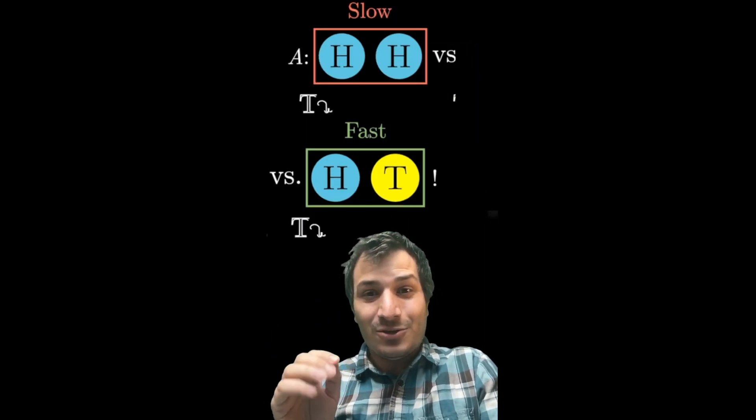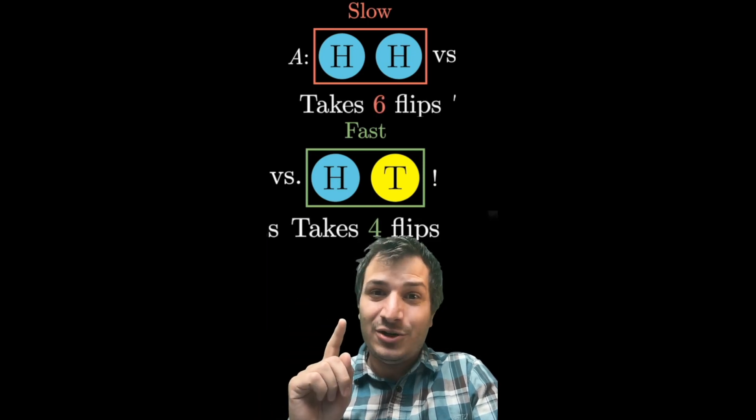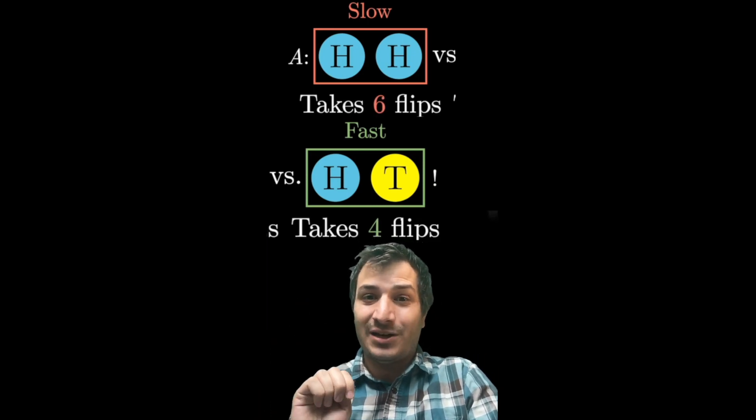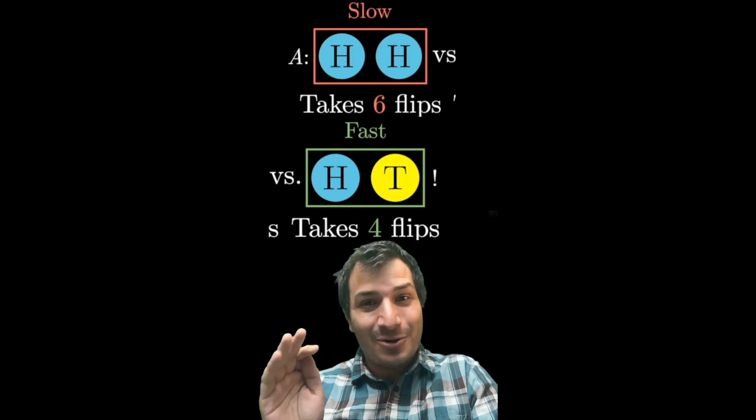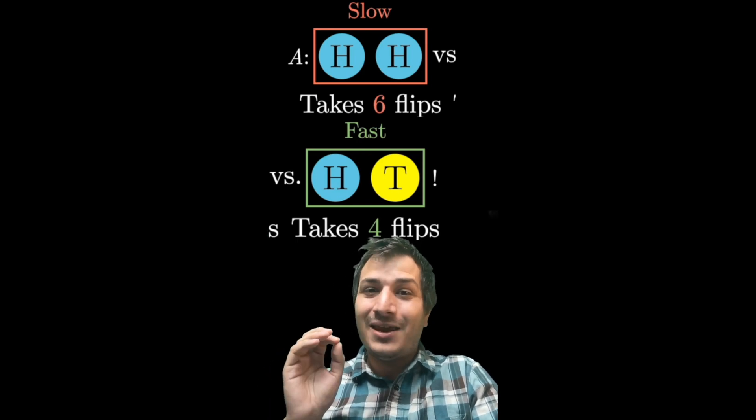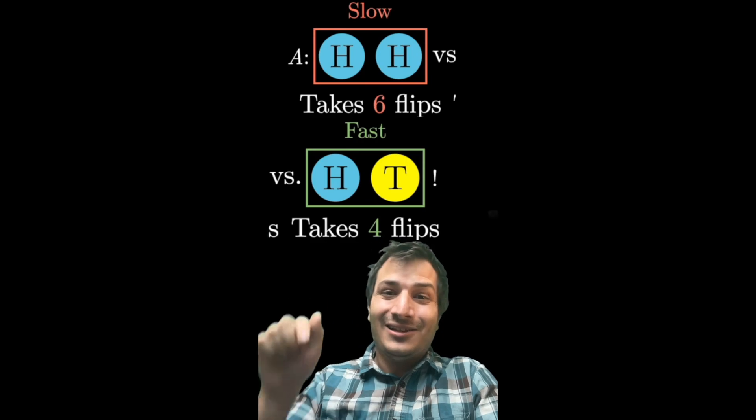And actually, if you go and you calculate it exactly, you'll see that heads, heads takes six flips on average, but heads, tails only takes four flips on average. There's a really cool theorem called the abracadabra theorem that explains this, and I made a video that explains the details. Link in the comments.